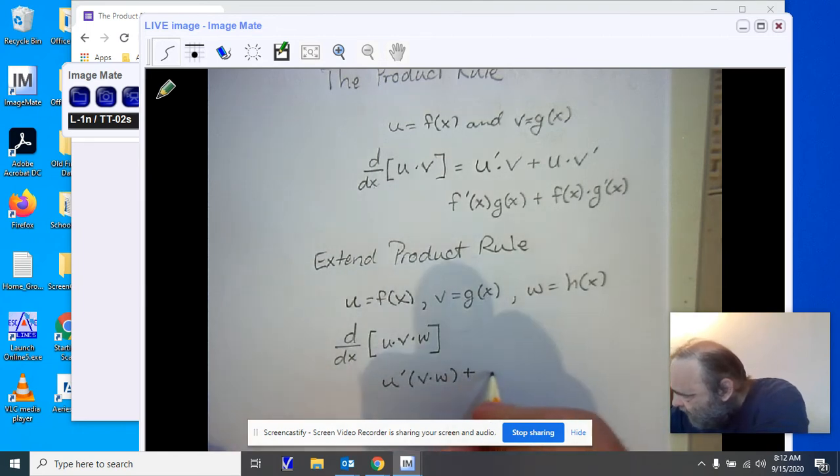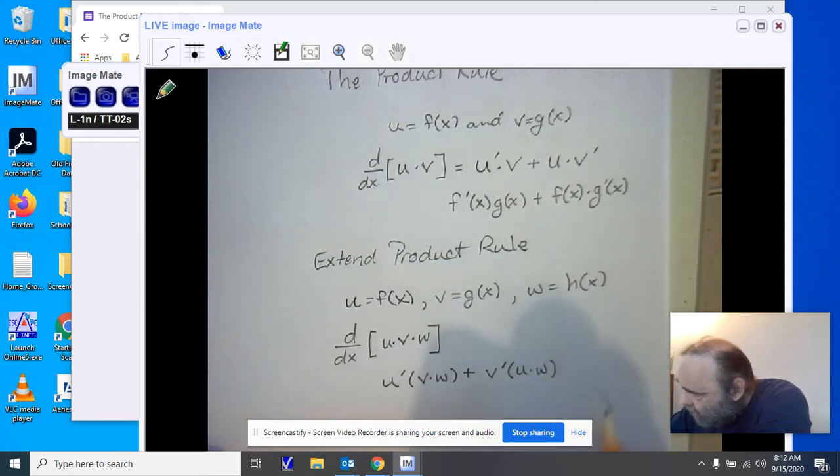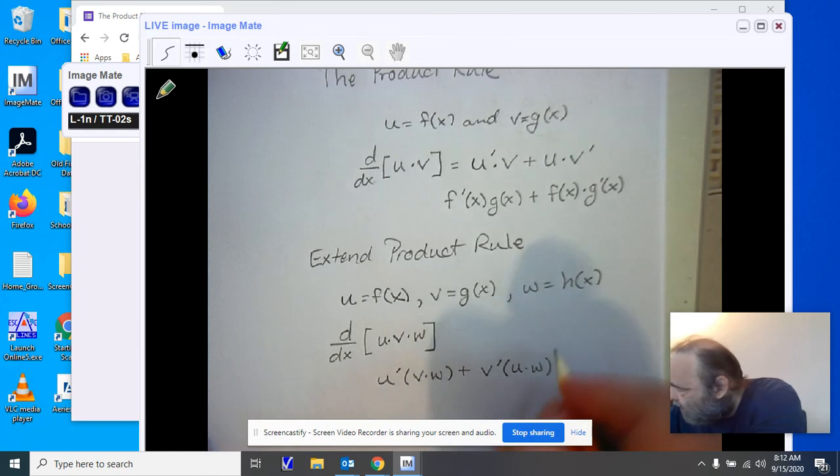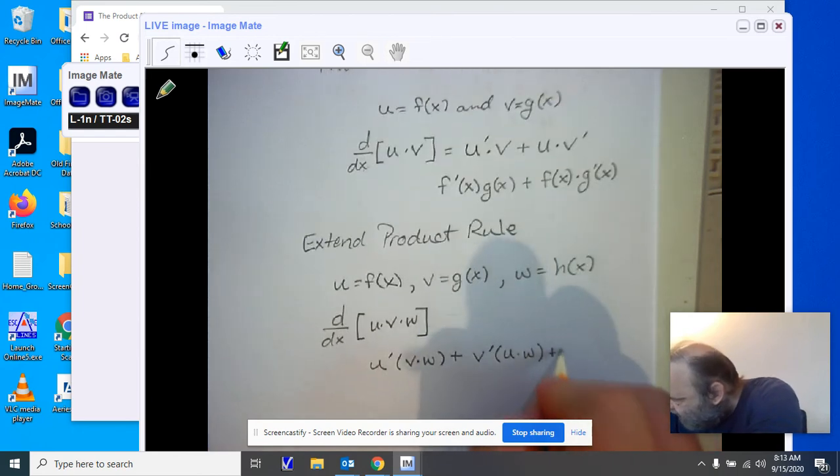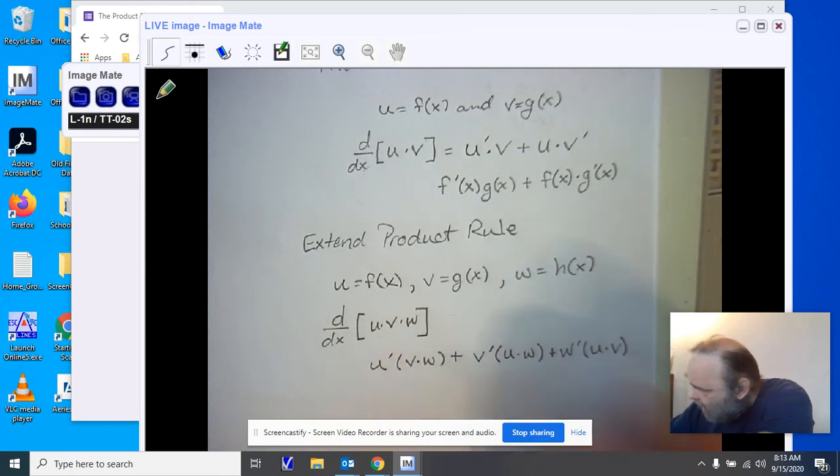We add to it the derivative of the second, and we leave the first and the last alone. And then finally, we take the derivative of the last piece, and we write the first and the second as they were.